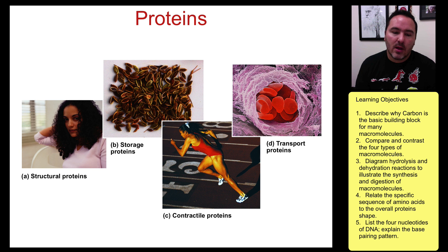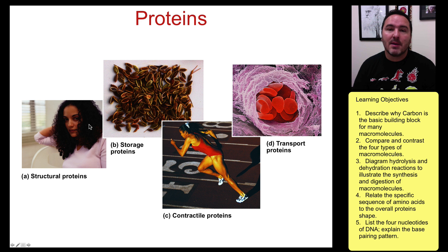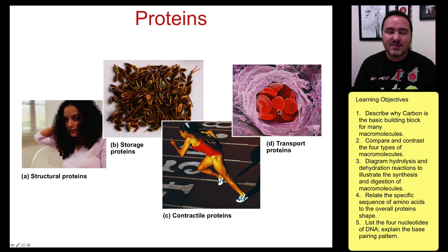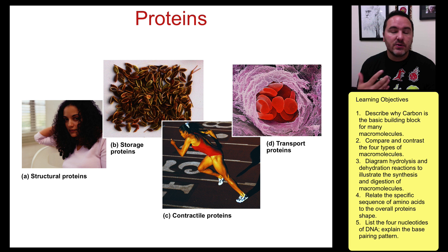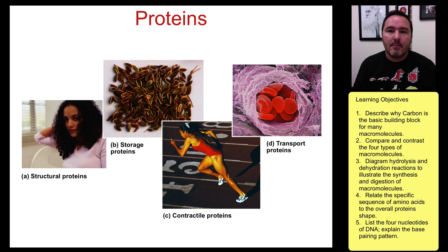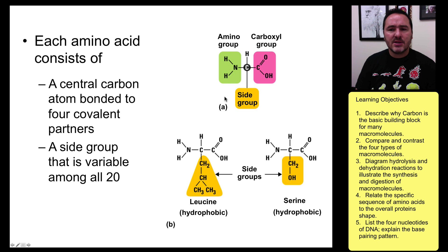Proteins are the third type of macromolecules important for life. Proteins can be involved in structure, storage, as contractile elements like in muscles, and as transport proteins in the blood. They're also used as enzymes and are embedded in all the membranes of every cell. Proteins are really an amazing part of life, and we'll talk much more about them later. For now, they are also built up from monomers put together to form a long polymer.